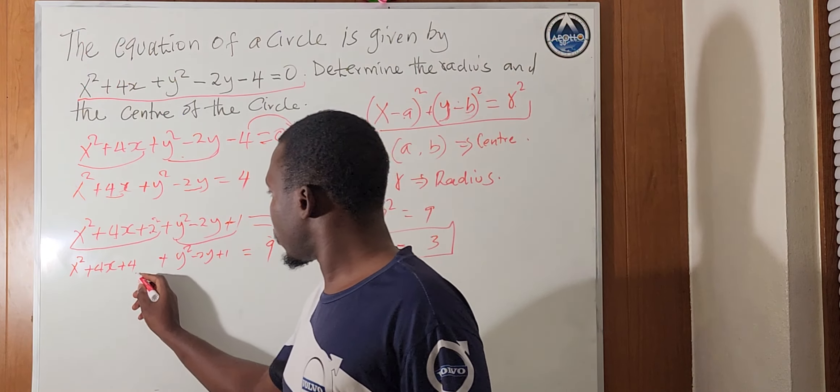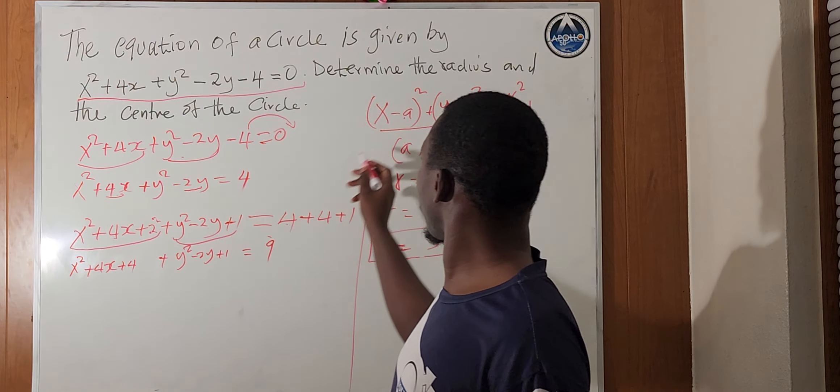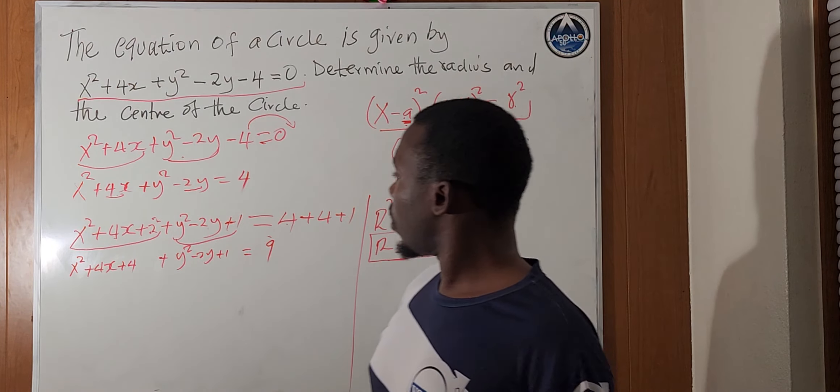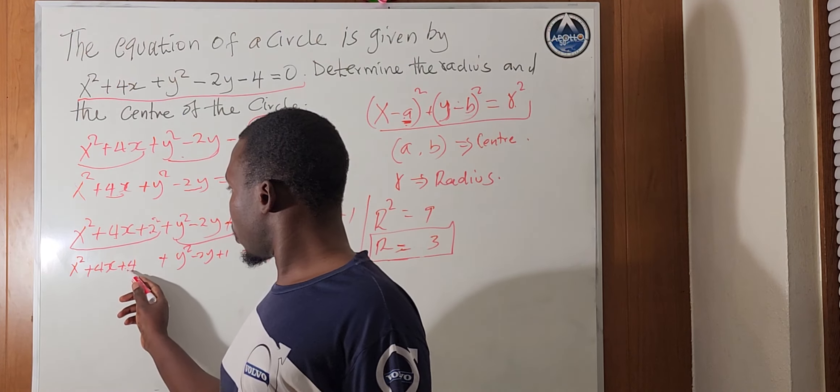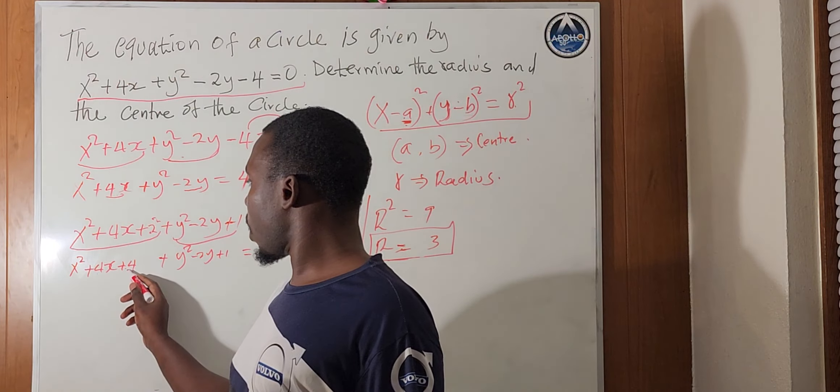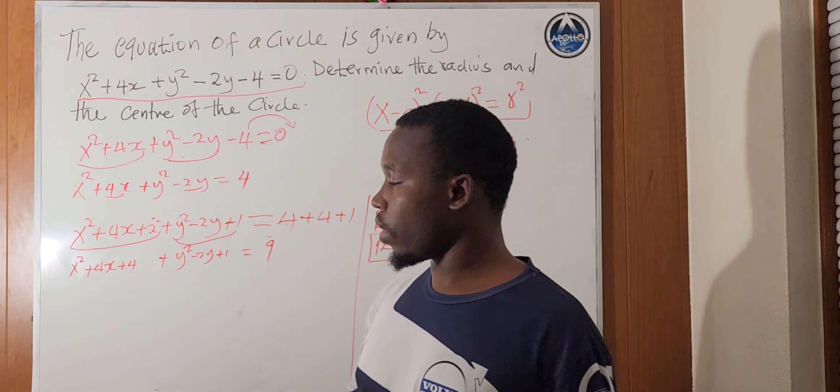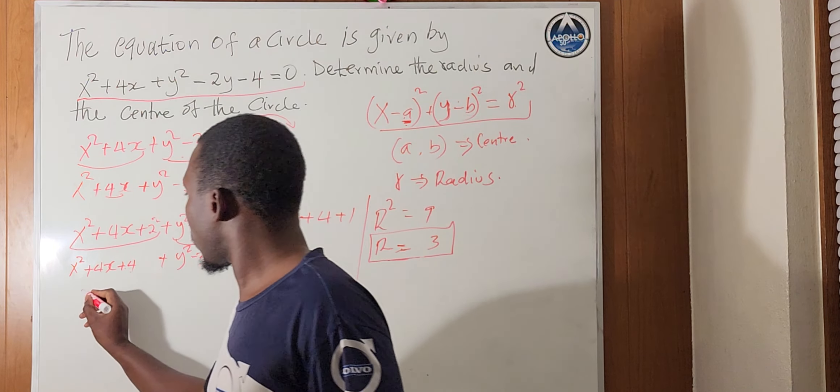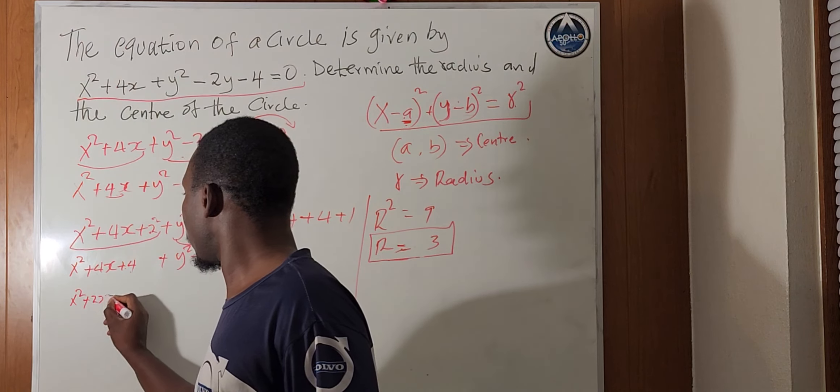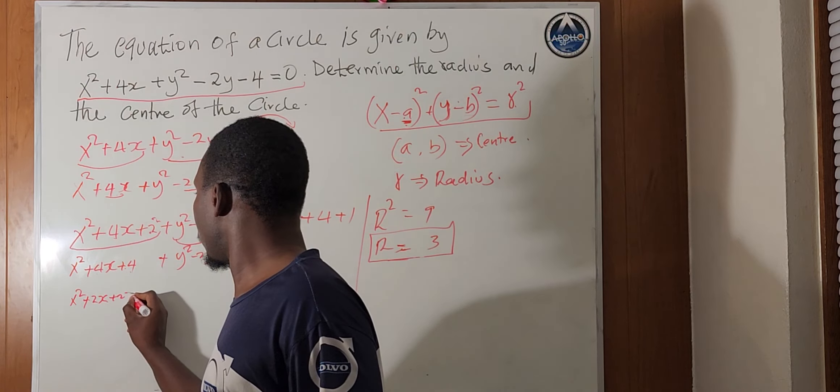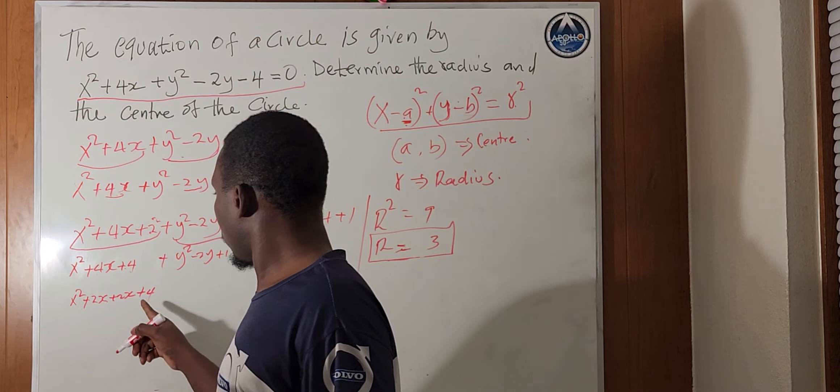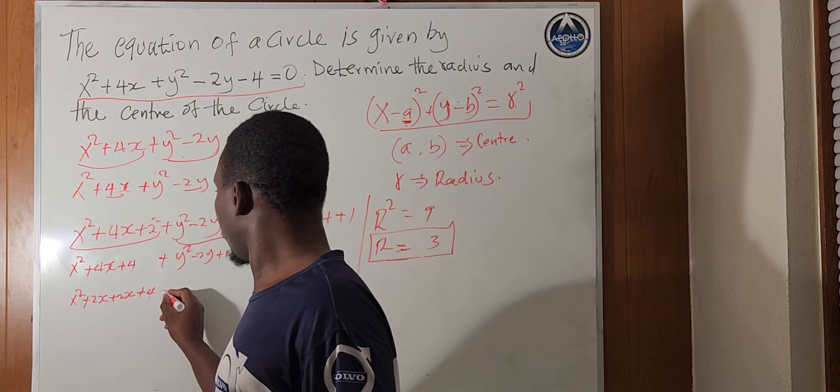So, next, let's see here, so that we can be able to find the a and the b. We look for 2 numbers here. When we add, we get 4. When we multiply, we get 4. So, that is 2 and 2. So, we can have x squared plus 2x plus 2x plus 4.